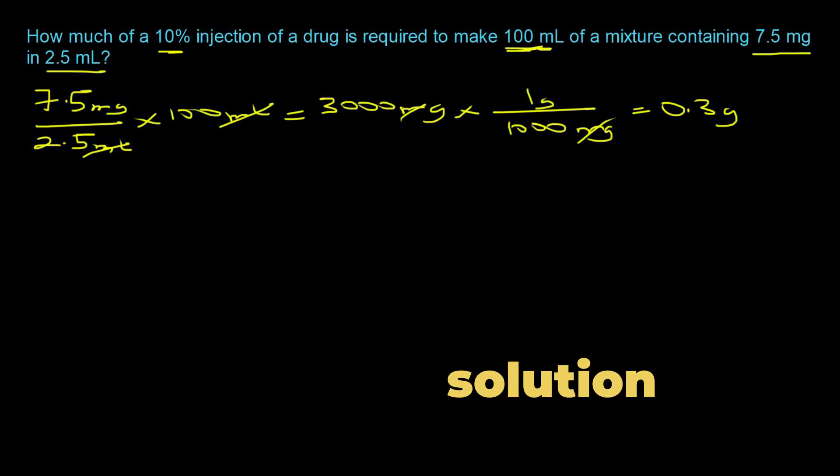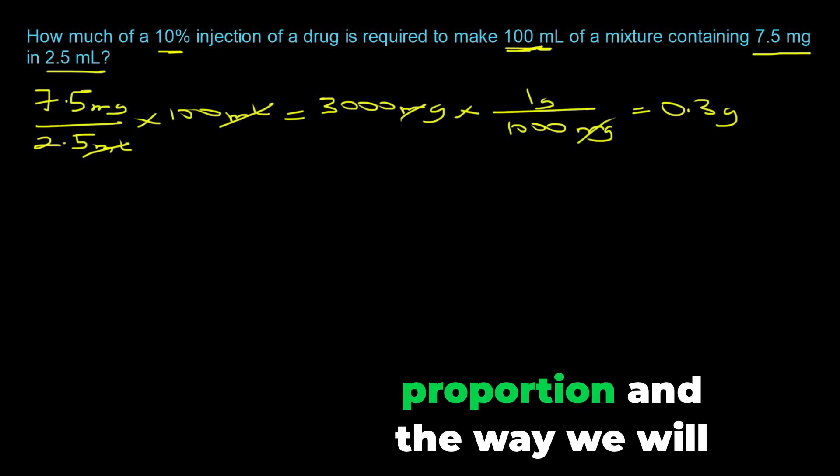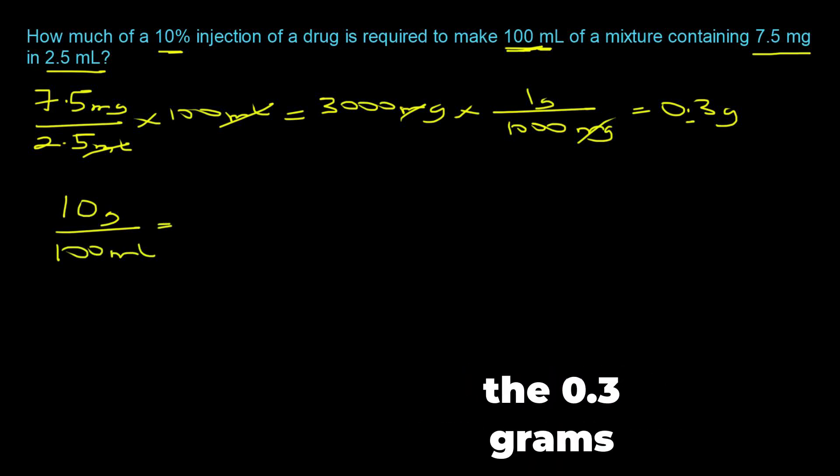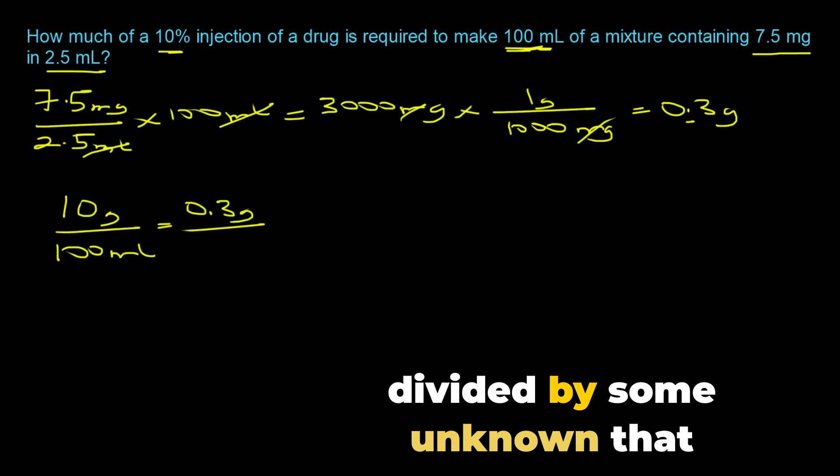10 grams of the drug in 100 milliliters of the solution. So we can set up a very nice proportion. The way we will do that is to write 10 grams in 100 milliliters is equal to the 0.3 grams divided by some unknown that we can call x.